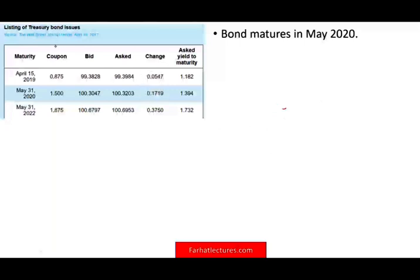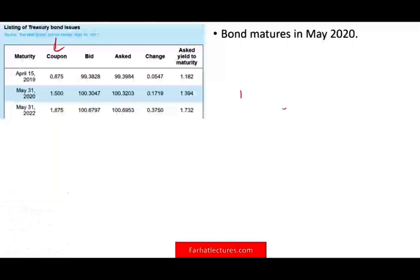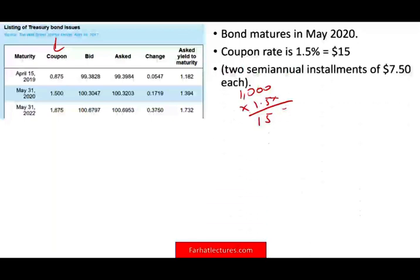This bond pays 1.5%, which is called the coupon rate. If you have a $1,000 bond and multiply by 1.5% per year, you get $15 per year. This payment is broken down into two semi-annual installments of $7.50 and $7.50.